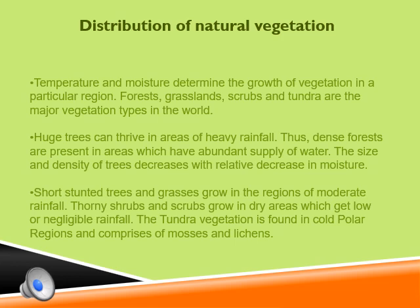Distribution of natural vegetation: plants need air, water, sunlight, and nutrients from the soil to grow. The growth of vegetation is mainly controlled by temperature and moisture. The availability of these essential requirements varies from place to place, which is why we see a large variety of plants on Earth. We can broadly classify natural vegetation into forests, grasslands, and shrubs.